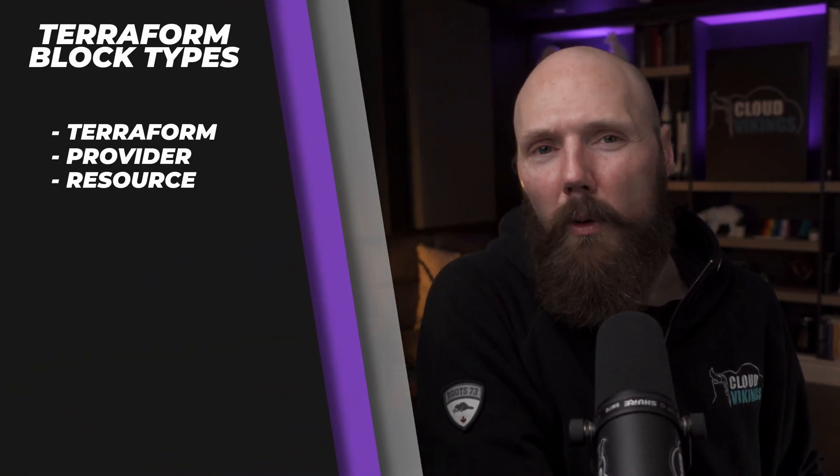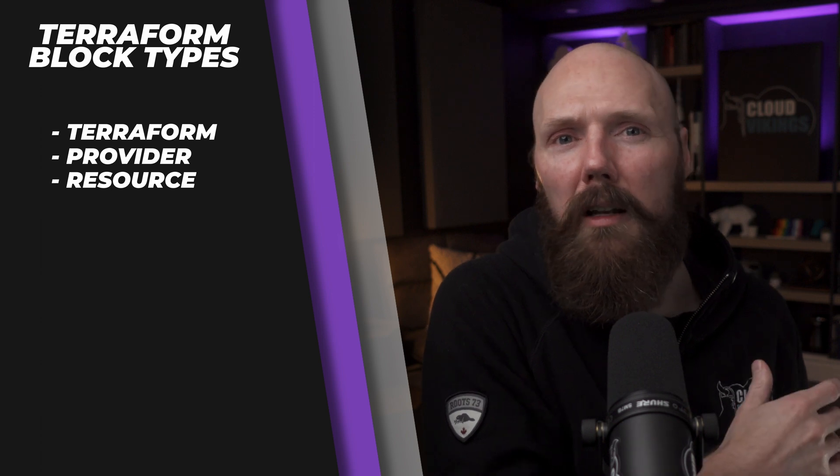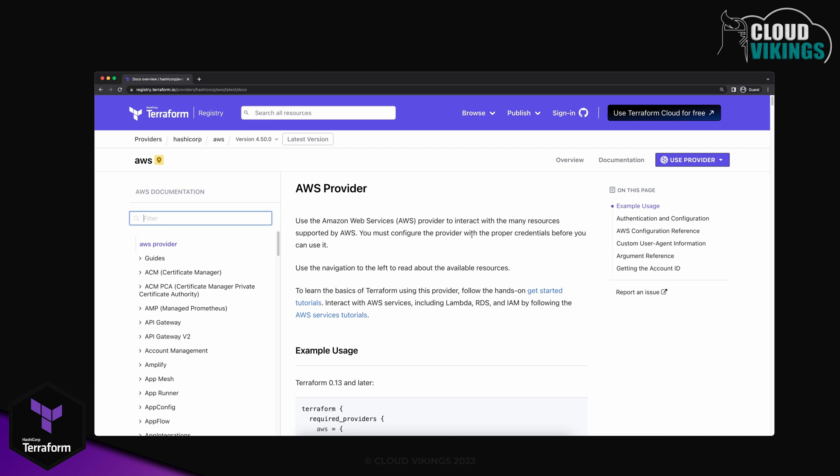Next on our list are resource blocks. Resource blocks define a resource type — the kind of infrastructure object Terraform will manage — along with all the arguments that resource supports. These different resource types come from the provider plugins we pull into Terraform. This provider-to-resource relationship can get a little confusing, so let's take a quick look at the AWS provider documentation to build a better mental model of how this ties together.